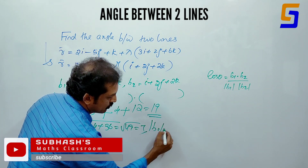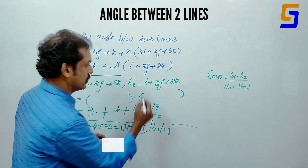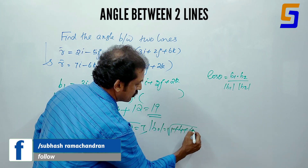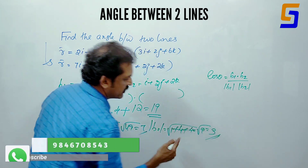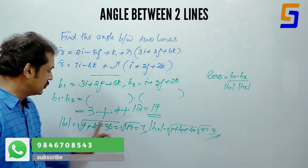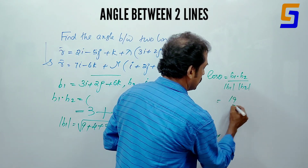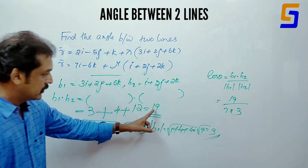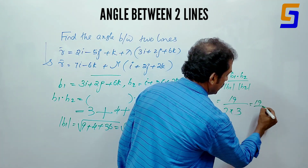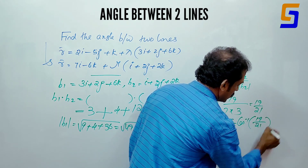Modulus b2 equals root of (1 squared plus 2 squared plus 2 squared) equals root of (1 plus 4 plus 4) equals root of 9, which is 3. Therefore cosθ equals 19 divided by (7 into 3) equals 19 by 21, so theta equals cos inverse (19/21).